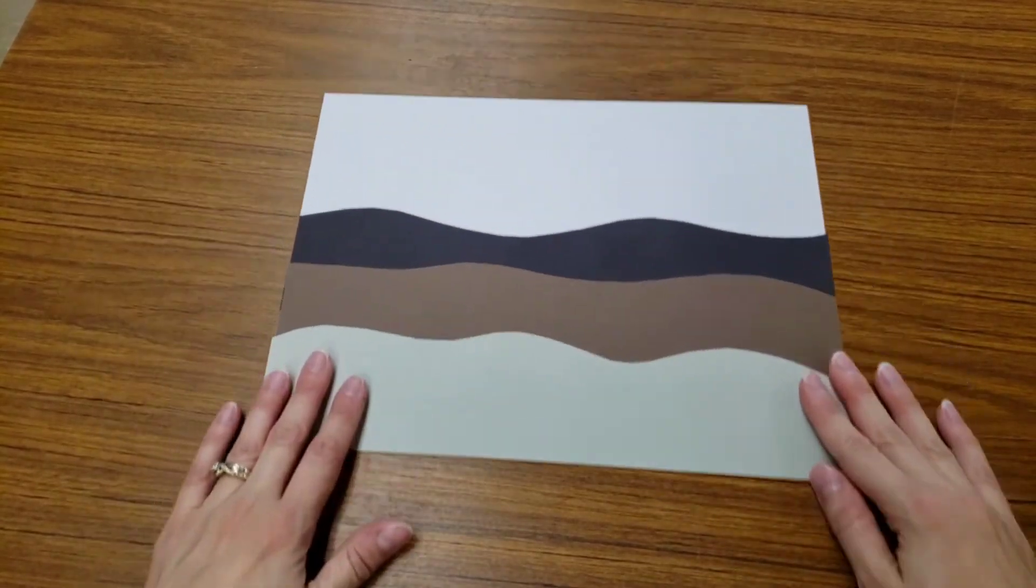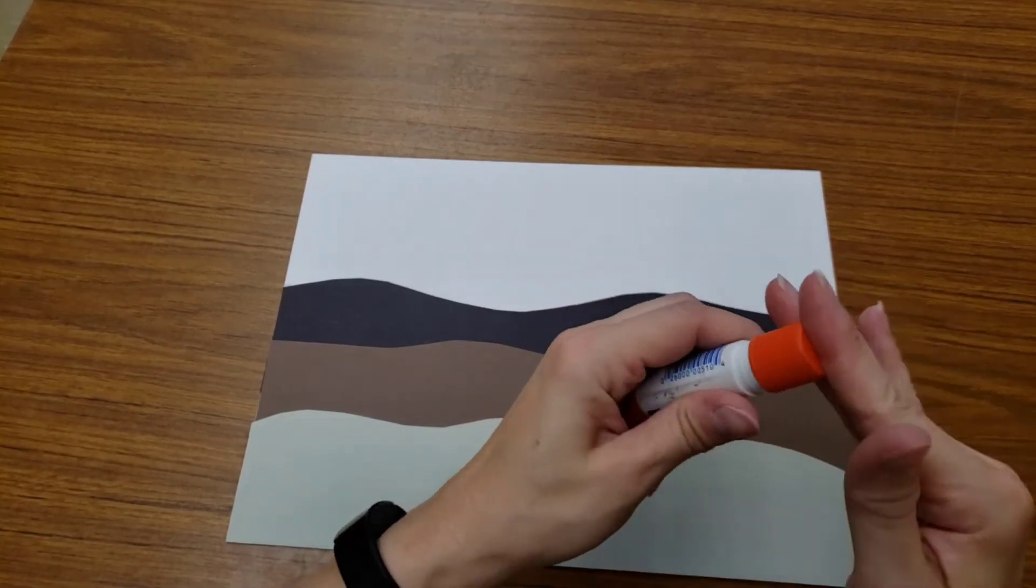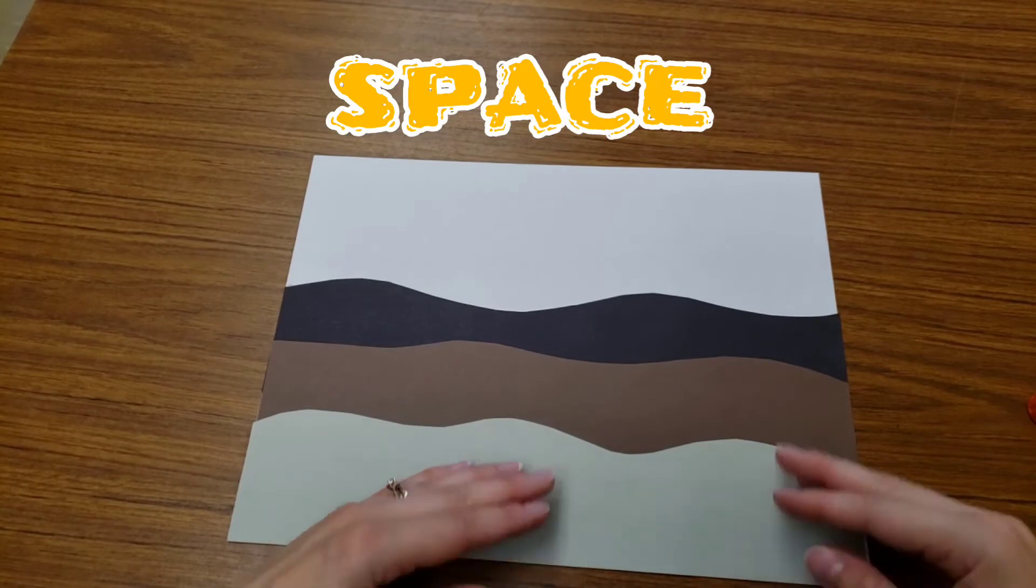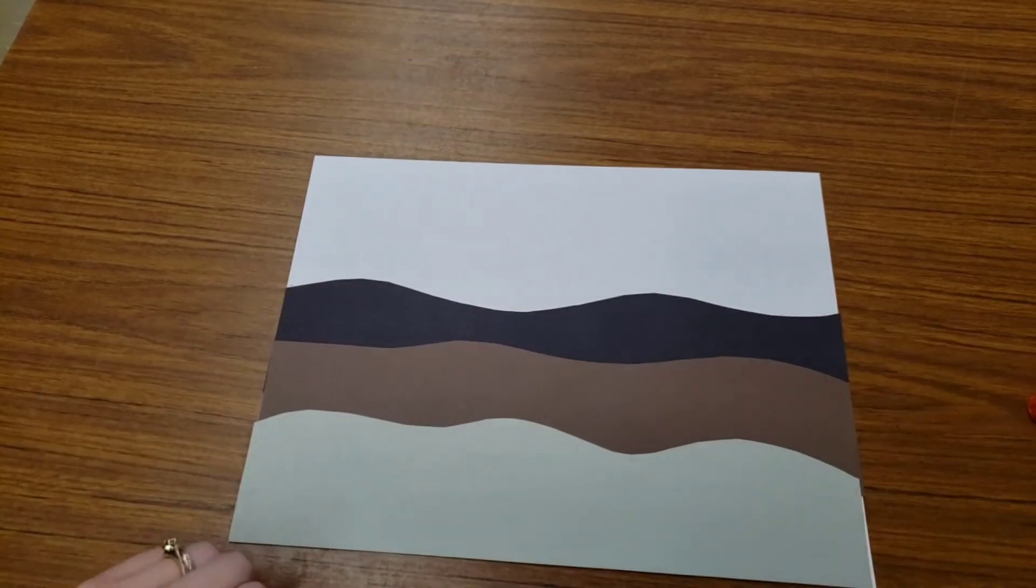So now our pieces of paper are creating some space. It shows distance. This looks close, this looks far away.